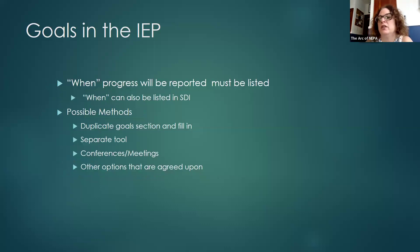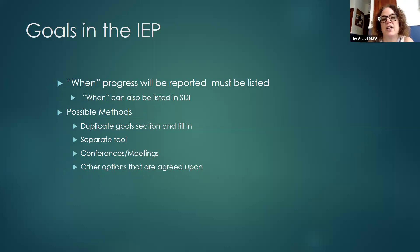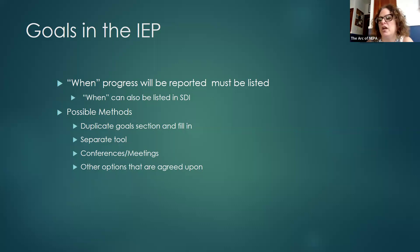When will progress be reported must also be listed. The 'when' needs to be reported and can sometimes be added into the SDI — for example, if you're increasing progress monitoring to monthly for a particular child, or if the parent is requesting data sheets that go along with the progress monitoring. That information could be listed in the SDI section as well as next to the goal.